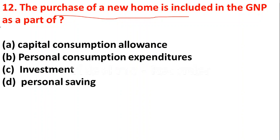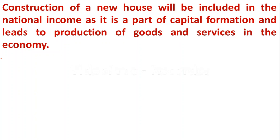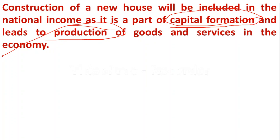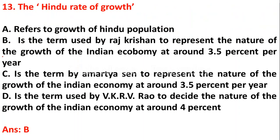Question 12: The purchase of a new home is included in GNP as a part of — A) capital consumption allowance, B) personal consumption expenditure, C) investment, D) personal saving. The answer is C — investment. Construction of a new house is included in national income as it is part of capital formation, because it leads to an increase in the production of goods and services.